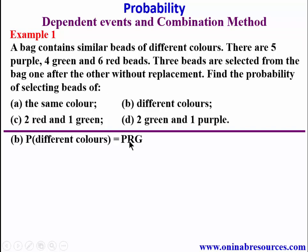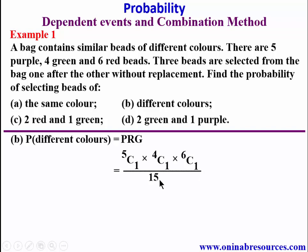We are picking one from the five purple, one from the six red, and one from the four green. That gives us 5C1 times 6C1 times 4C1, all over 15C3. Simplifying: 5C1 gives 5, times 4, times 6, over 455.